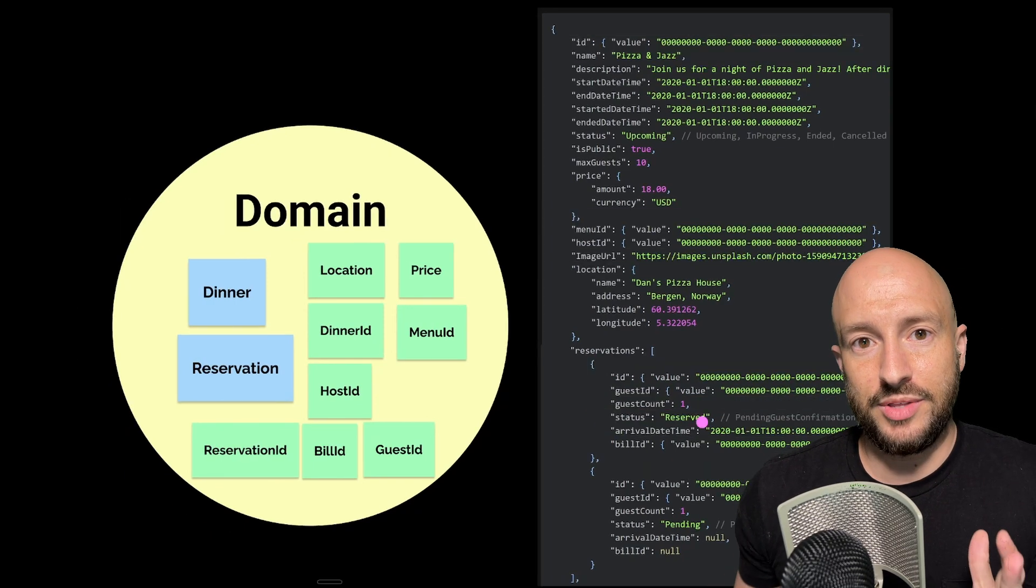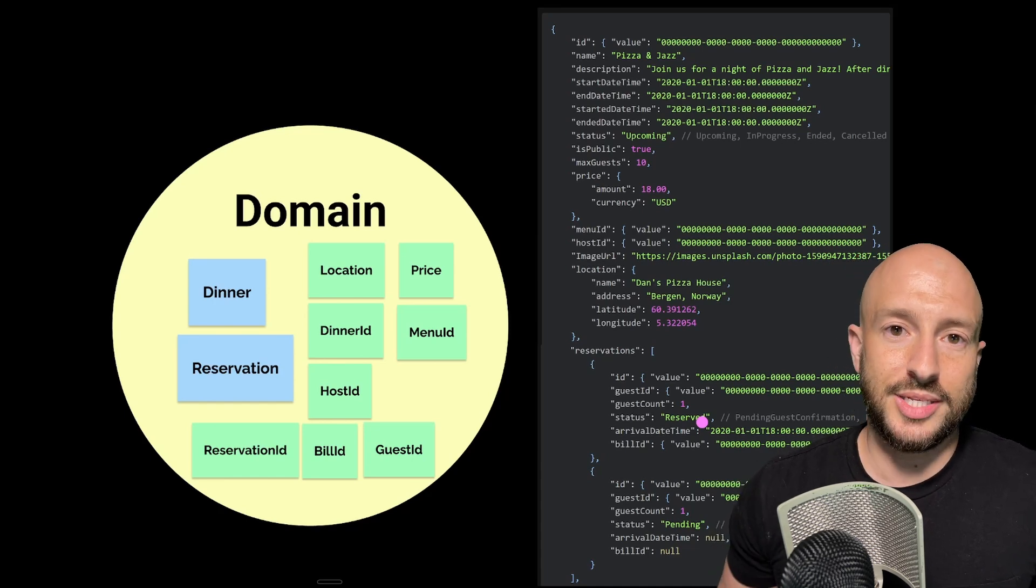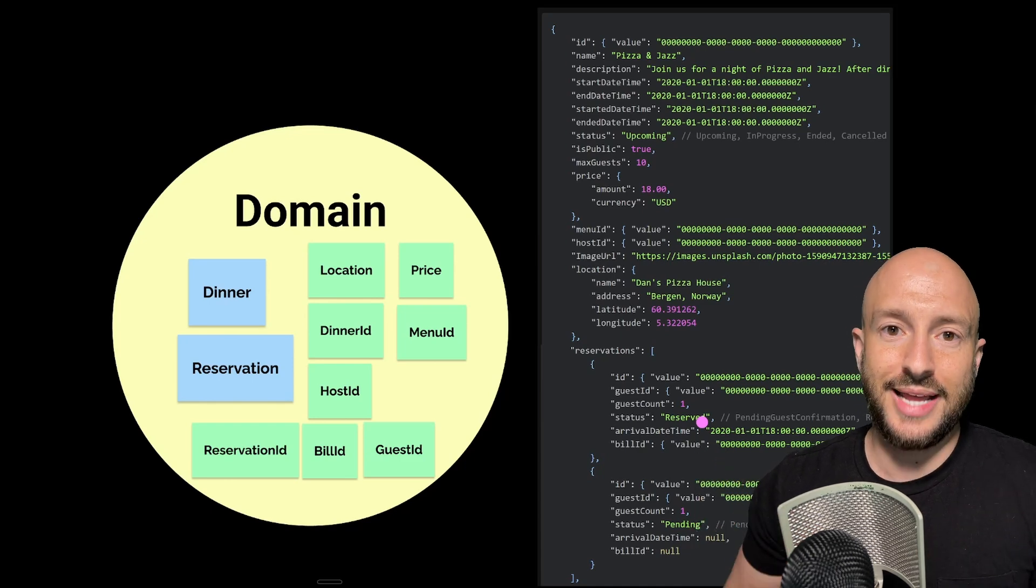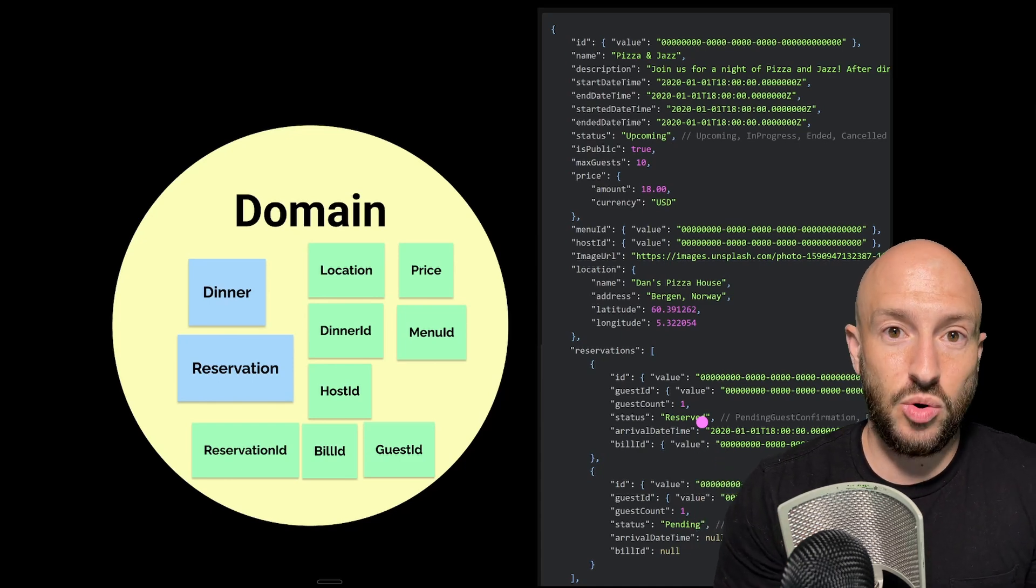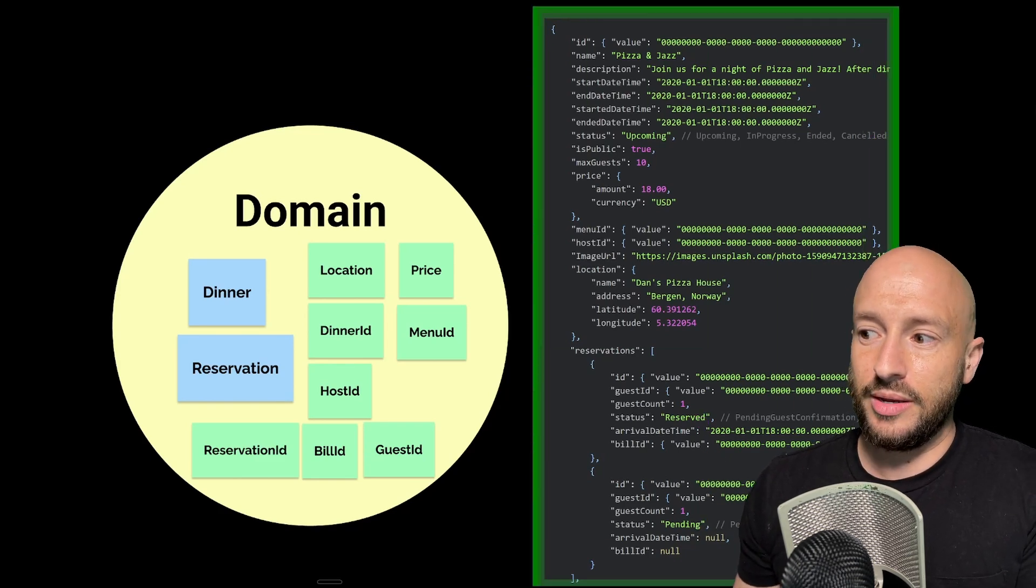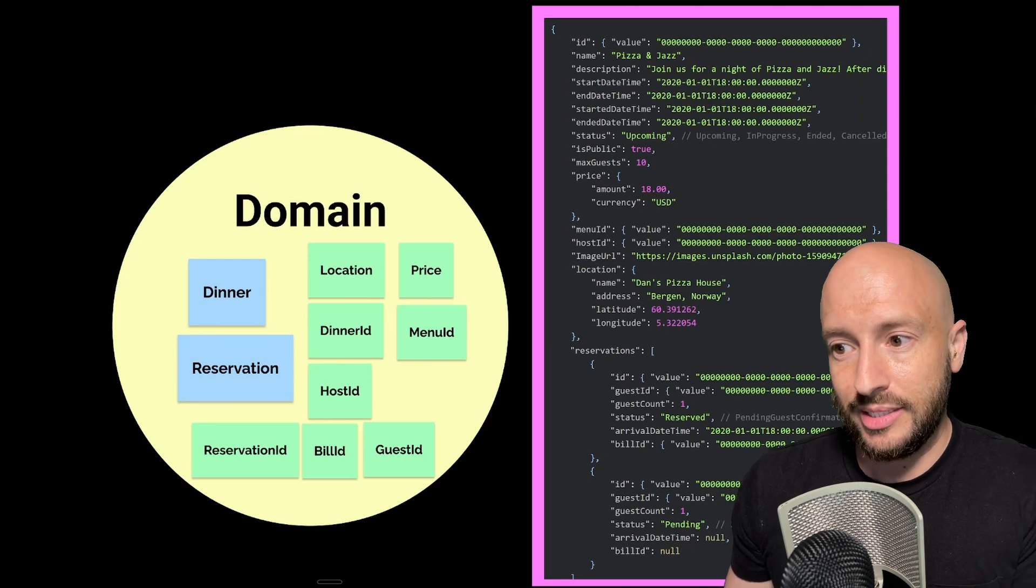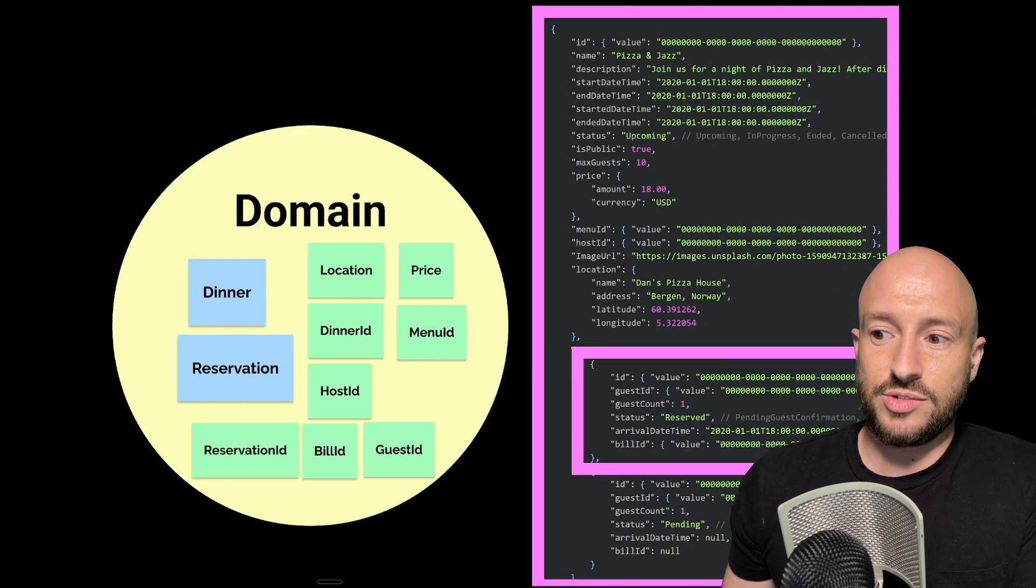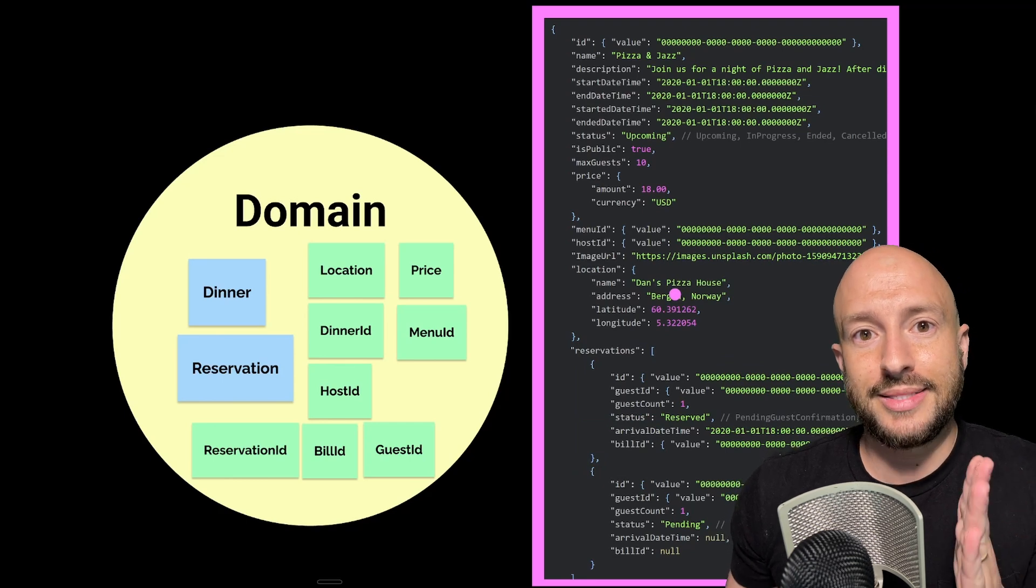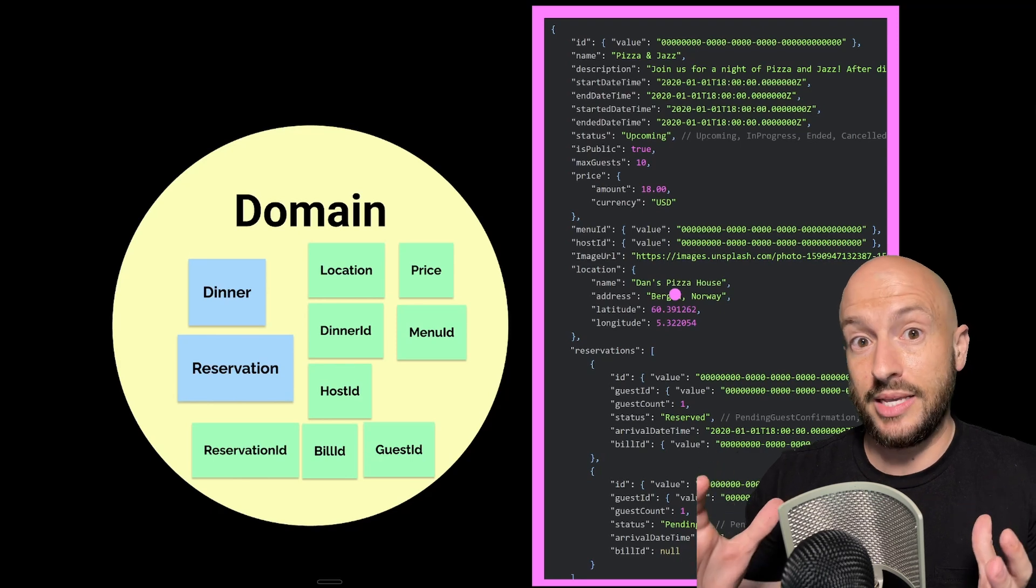Now that we have a better understanding of these terms, I want to introduce another very important concept, which is an aggregate. Basically, when you have one or more domain objects that need to stay consistent as a whole, then we call it an aggregate. Looking at this entire thing, we have here an aggregate which is the dinner aggregate. And the dinner aggregate has inside the reservation entity and the various value objects. And it's the aggregate's responsibility to make sure that this object is always valid as a whole.